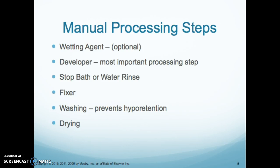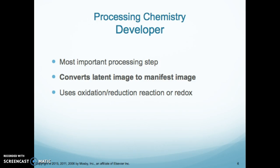So with manual processing, you have a wet agent — that's optional. You can go straight to the developer, which is the most important step. Then there's a stop bath or a rinse, then the fixer, then a wash, and then drying. The developer is the most important step — it converts the latent image to the manifested image. This is a test question, so make sure you get it right.